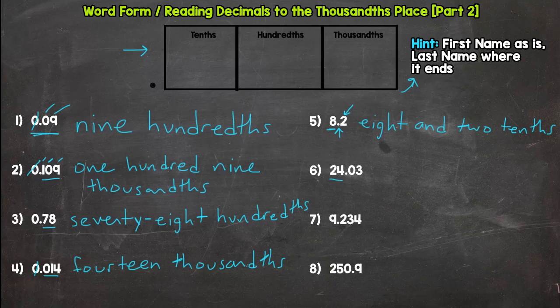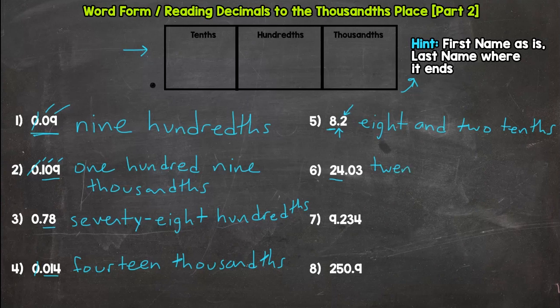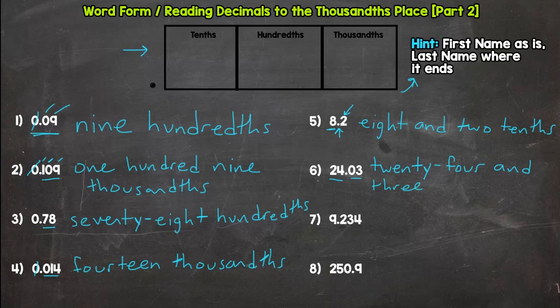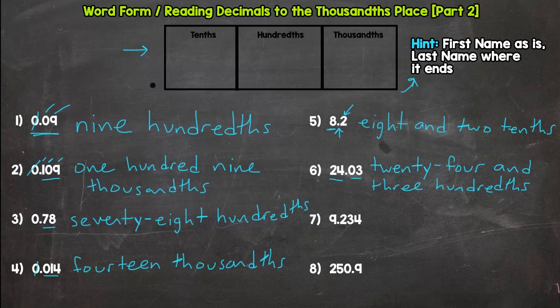All right. Number six. The whole. Twenty. Four. And. As is. Three. And that ends in the hundredths. Read it back. Twenty. Four. And. Three. Hundredths.